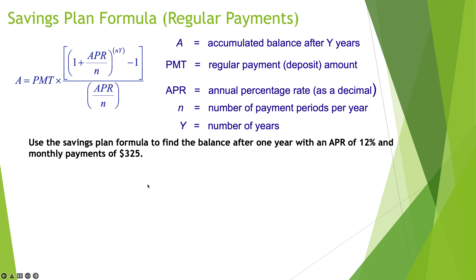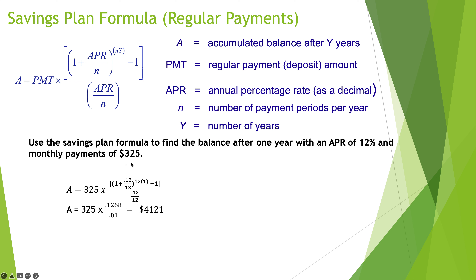Use the savings plan formula to find the balance after 1 year with an APR of 12% and monthly payments of $325. Since it's monthly, n = 12; the time is 1 year. Plugging in: the result simplifies to 0.1268 ÷ 0.01, multiplied by $325, giving a balance of $4,121. A reasonability check: $325 × 12 = $3,900 in principal, so $4,121 is a reasonable total.